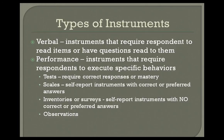Instruments can also be divided into tests, which require correct responses or mastery of information; scales, which are self-report instruments with correct or preferred answers — the Beck's Depression Inventory is one example; and inventories or surveys, which are self-report instruments with no correct or preferred responses, such as an instrument about career preferences where there's no perfect answer. Finally, we have observations — for example, observations of what students are doing or of someone swimming.